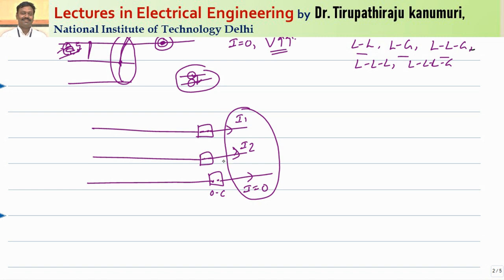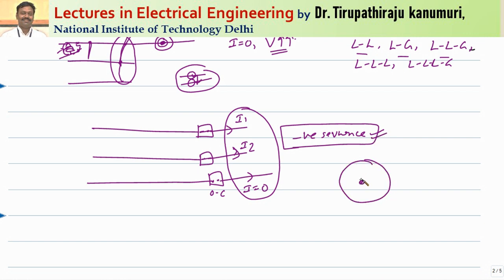The unbalanced system can be represented as a sum of positive, negative, and zero sequence components. The negative sequence components will start passing. In a motor or generator, if positive sequence components rotate in one direction at speed Ns, the negative sequence components will rotate in the opposite direction at speed Ns. The relative speed between positive and negative sequence components will be two times Ns. The EMF induced in the rotor is proportional to this relative speed, so huge voltages are produced.